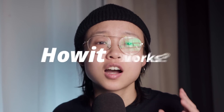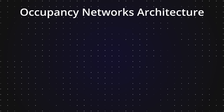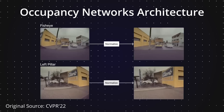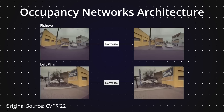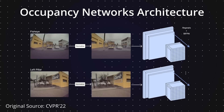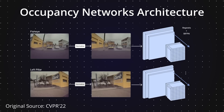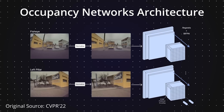Now that we know what an occupancy network is, let's take a look at how it works. The process begins with the normalization of images from various camera streams, mainly to get rid of vehicle-specific variables like intrinsic calibration and lens distortion. Following normalization, these images are processed through advanced image backbone architectures such as RegNets and BiFPNs, which are responsible for extracting high-dimensional image features.